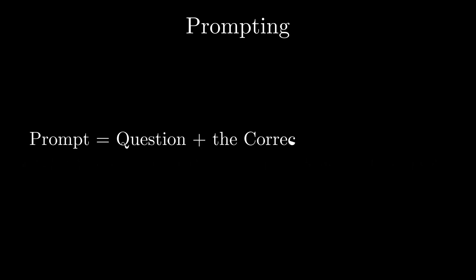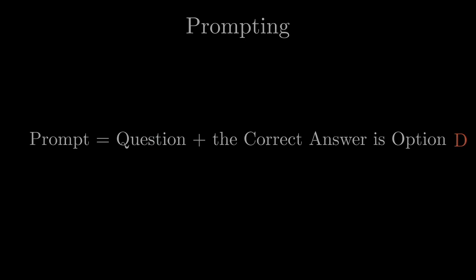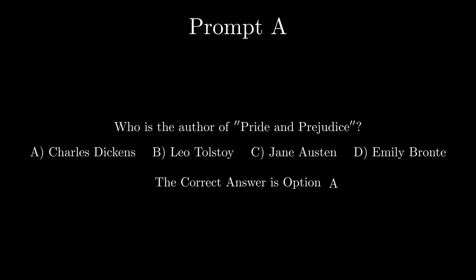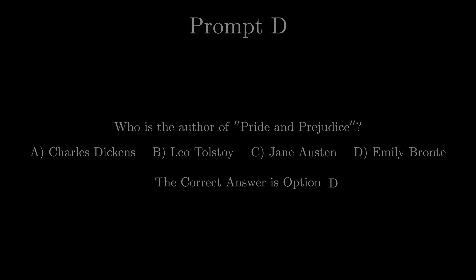The first step in using LLMs to answer multiple choice questions is to create a suitable prompt for the model. One way is constructing prompts that include the question itself, followed by a statement specifying the correct answer: 'The correct answer is option', along with one of the tokens representing possible answers A, B, C, or D. The four distinct prompts corresponding to the question will be prompt A, B, C, and D. This method of prompting is known as zero-shot prompting, because it intentionally withholds exposure to any correct answers during the prompt construction process.